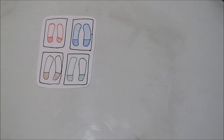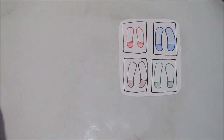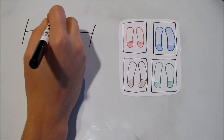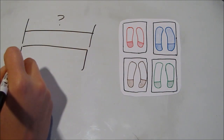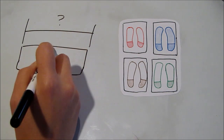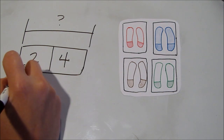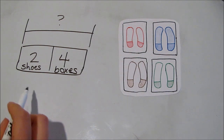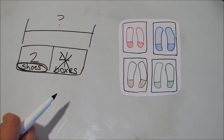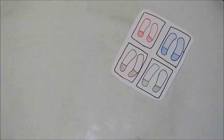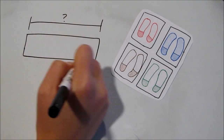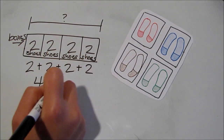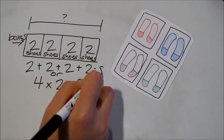We're going to start with combining strip diagrams. If George has four boxes of shoes, and every box has two shoes in it, we can use a strip diagram to show this and find out how many shoes he has in all. Most kids want to make a strip diagram with two parts — four boxes and two shoes — but we're not combining boxes and shoes, we're just combining shoes. The boxes are what the shoes are in, so we'll draw our four boxes and then put two shoes in each box. We can either add two plus two plus two plus two, or, because our groups are equal, we can multiply four times two.